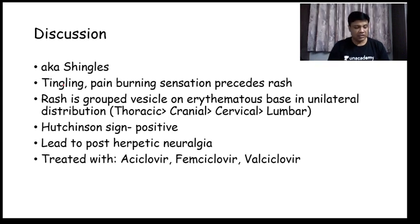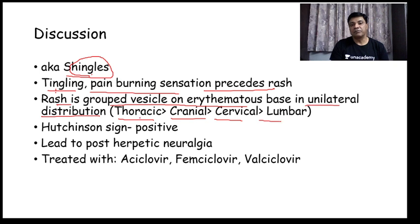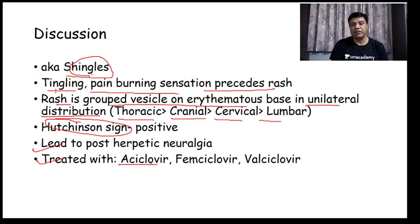Herpes zoster is also called shingles. Tingling and pain-burning sensation precede the rash. The rash consists of grouped vesicles on an erythematous base, seen in a unilateral distribution — herpes zoster is always unilateral. The thoracic region is most commonly involved, then cranial, then cervical, then lumbar. Hutchinson sign will be positive — when the tip of the nose is involved, the eyes are involved. It may lead to post-herpetic neuralgia. Treatment is acyclovir 800 mg five times a day for 7 days, famciclovir 250 mg thrice daily for 7 days, or valacyclovir 1 gram three times daily for 7 days.